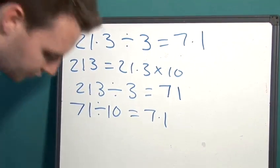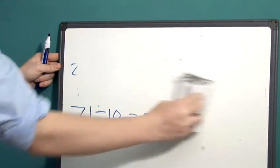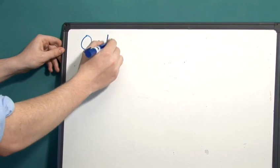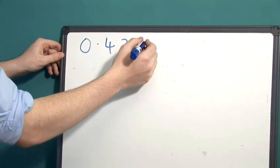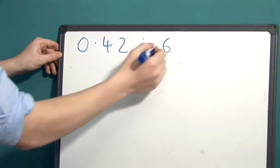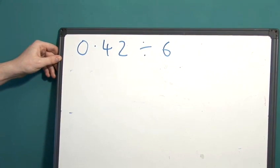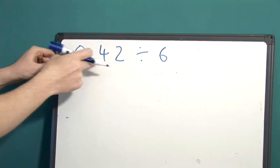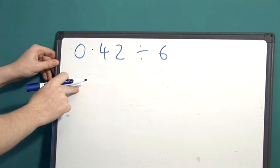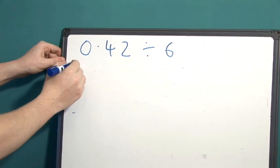Let's try another example. 0.42 divided by 6. What we can do here is multiply 0.42 by 100 to give us 42.